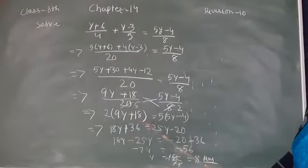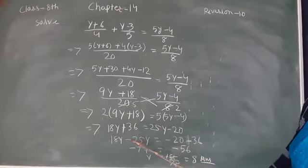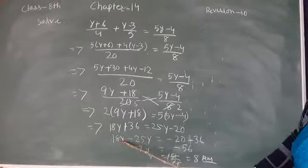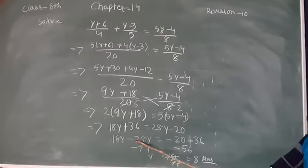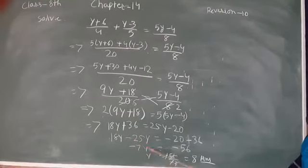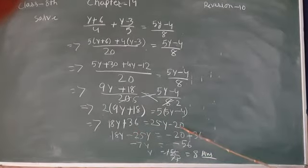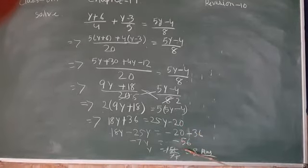18y minus 25y. How do minuses come? Because we change the side. Now 18y-25y is equal to -7y, and here on the right hand side, -20 and -36, that means -56.